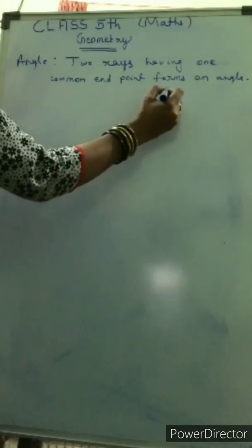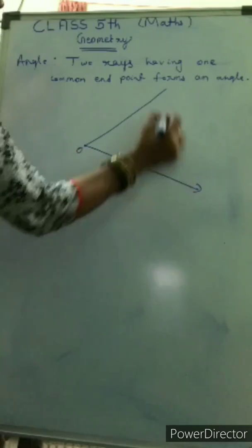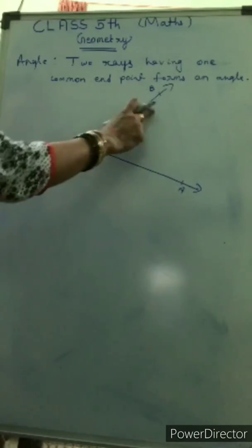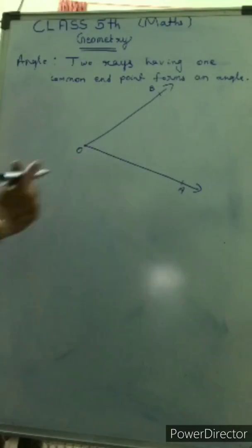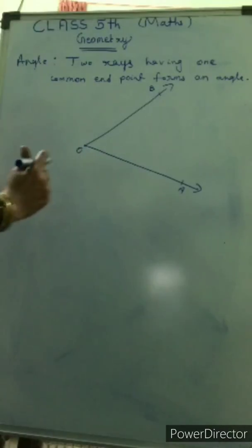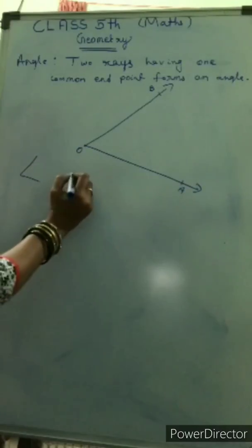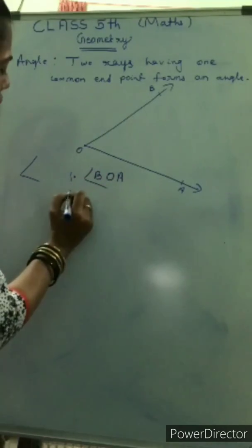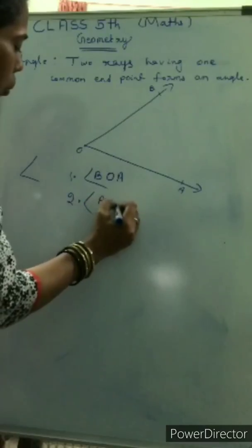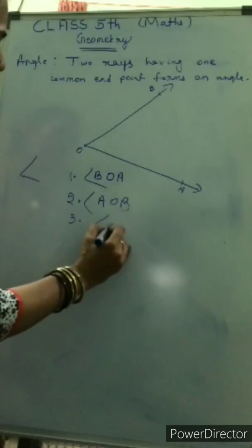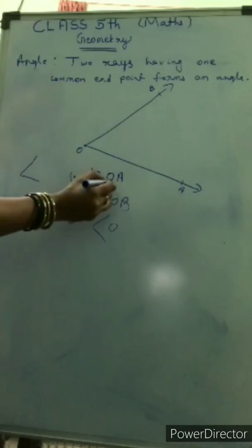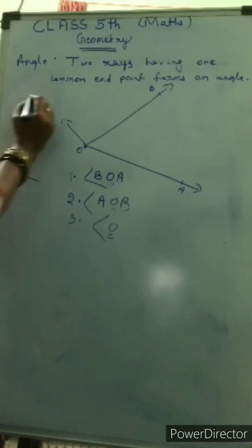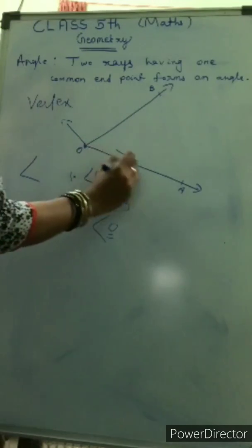I just draw again separately. This is your O, this is your A, this is your B. Now children, this angle name is BOA or AOB. There are three types of writing the angle notation. First, you start from B: B, O, A. Second, you start from A: A, O, B. Third, you can write simply angle O. In all three cases, the middle one is O — this common end point is known as your vertex. And these two rays are known as the arms of the angle.